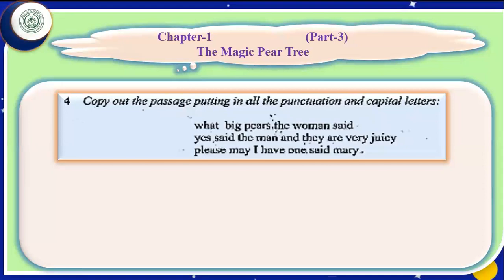If we want to write a phrase or sentence using the same words which someone has said, we shall write that phrase or sentence in inverted commas. One more thing: if there is a name, the first letter of a proper name is always capital. If we follow these things, we can punctuate a paragraph very easily. Let us start. 'What big pairs' — the first letter W will be capital. After 'said', there will be a full stop.